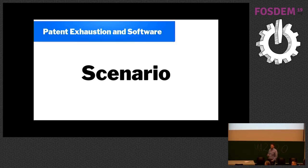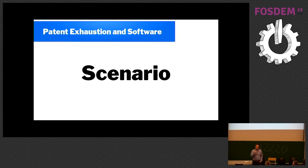Question: I'm still a bit confused about exhaustion. Does it mean that if you have a patent and you license it to me, does that mean I have the right to use your code and distribute it with a copyleft license? Answer: It means that if I have a patent and I license it to you, then you can distribute it to your neighbor and I can't sue your neighbor. I can't sue you because I've given you a license, and I can't sue your neighbor because the patent is exhausted.